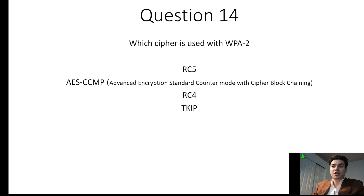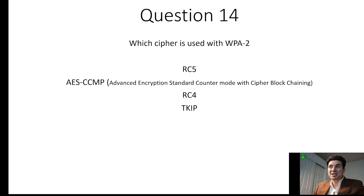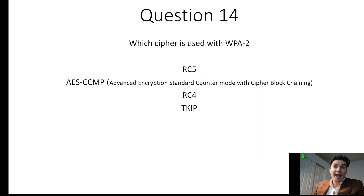Question 14. Which cipher is used with WPA2? RC5 is a symmetric key block cipher encryption algorithm that was later replaced by AES. AES — Advanced Encryption Standard counter mode with cipher block chaining — is used with WPA2.